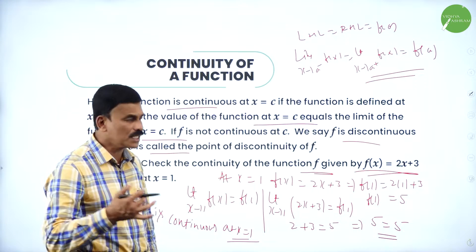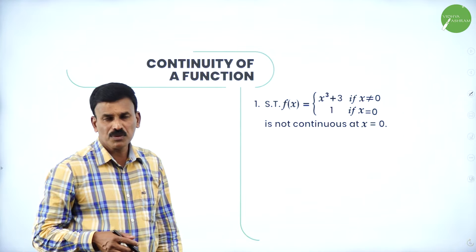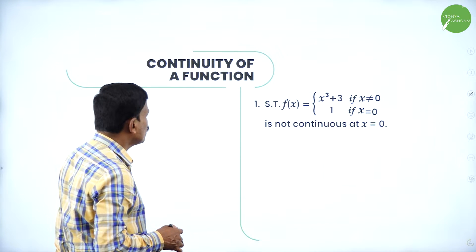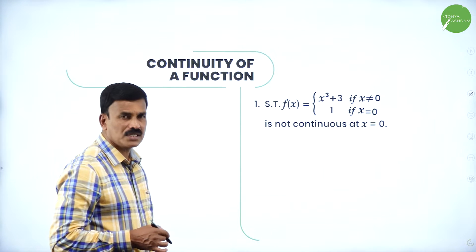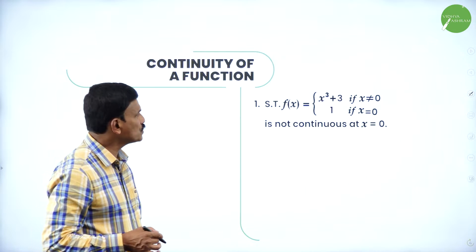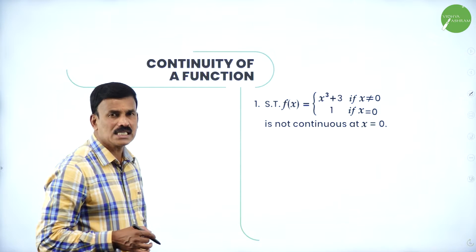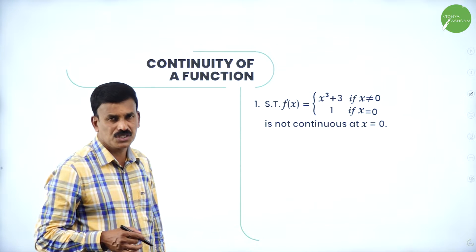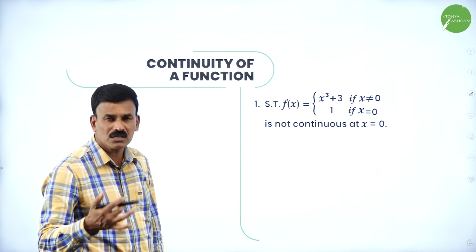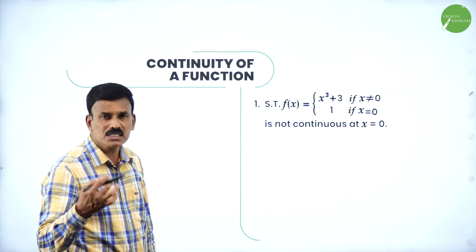Now let us come to a similar type of problem — these are very important for 3 marks. Show that f(x) = x³ + 3 if x ≠ 0, and 1 if x = 0, is not continuous at x = 0. We have to verify whether this is continuous or not. Since it is given as not continuous, that means LHL ≠ RHL ≠ functional value.